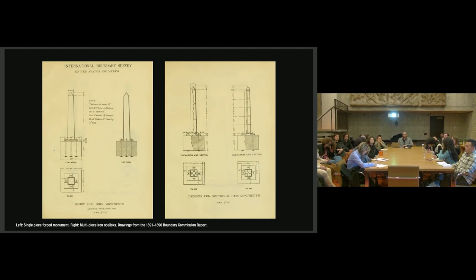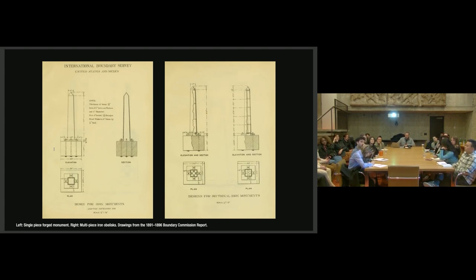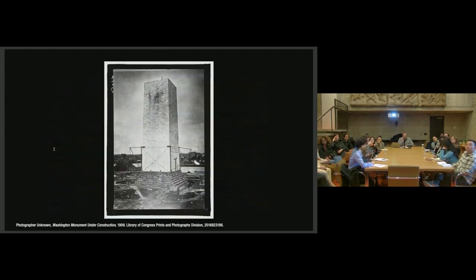As Brian Crane and others have described, obelisks have always represented a type of power linked to the state and its right as sovereign. The simple form of a tapered pillar topped with a small pyramid has long been associated with representations of imperial state legitimacy and strength. For the Egyptians, that power was registered in the ecclesiastical order of the sun gods. For the Romans, it represented Roman Empire and later the Catholic Church. For the French, it was the power of the Enlightenment, rationality, and the triumph of liberalism. And for the Americans, the obelisk came to signify republicanism, democracy, and America's imperial ambitions.